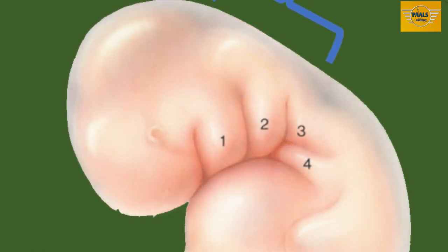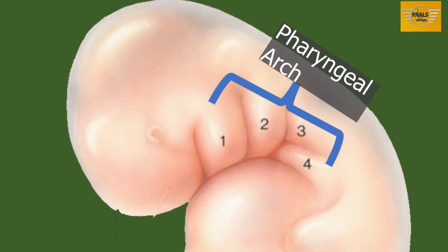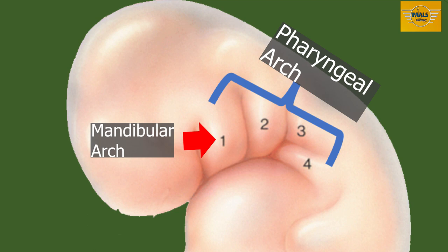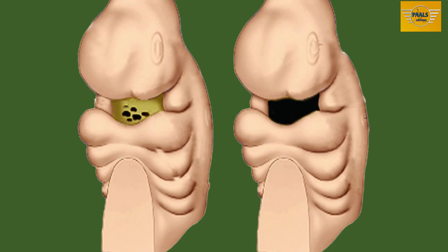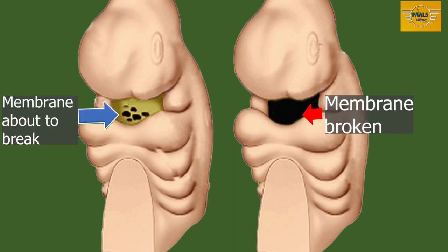Another structure present at the fourth week is the pharyngeal arch — curved cylindrical mesodermal thickenings on each side of the upper part of the developing foregut, lying between the head bulge and the pericardium. The most important arch for face development is the first arch, called the mandibular arch. At the floor of the stomatodeum is the buccopharyngeal membrane, which separates it from the developing foregut. This membrane breaks during the fourth week, establishing communication between the future oral cavity and the foregut.